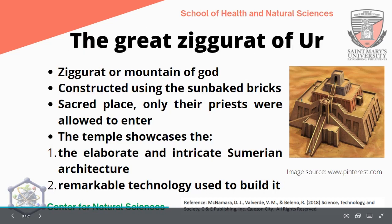The Great Ziggurat of Ur is the 'mountain of God.' It is constructed using sun-baked bricks. It is a sacred place, and only their priests were allowed to enter — it is the center of their religious gatherings. The temple showcases the elaborate and intricate Sumerian architecture, which is the foundation of early architecture. The remarkable technology used to build it is very evident, just like the pyramids and other ancient architecture present.